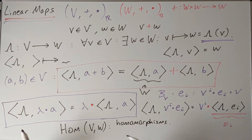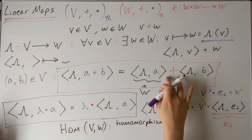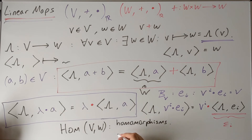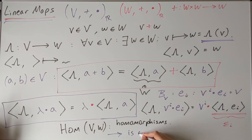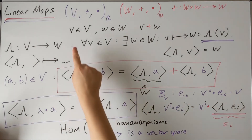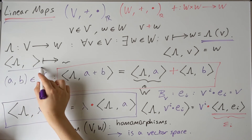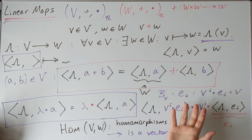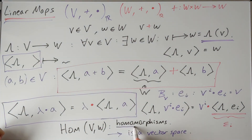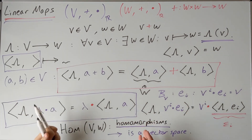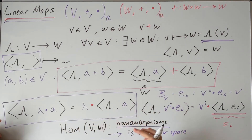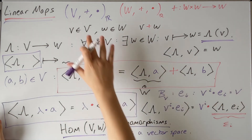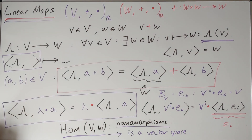The key point is that because these maps are linear — meaning we can add them and scale them — the set of all homomorphisms, i.e., the set of all maps between two vector spaces, is itself a vector space. We can add maps in a vectorial way and scale them just as we would any other vector. So the set of all structure-preserving maps between two vector spaces is itself a vector space. This is going to be a really key point moving forward.